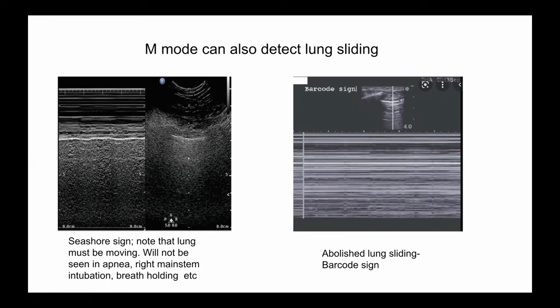If there's air between the visceral and parietal pleura, movement is abolished and you get what's called the barcode sign. This pattern continues because movement below the visceral pleural line is not present, and a very different profile is achieved.